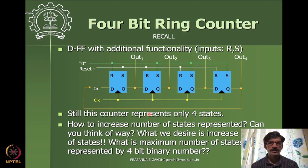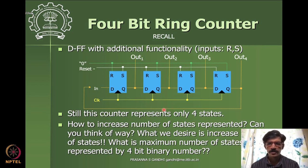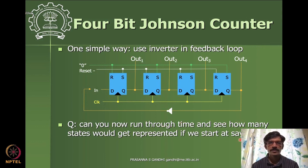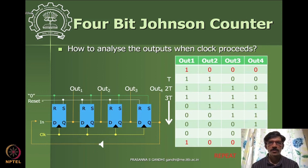A variant is the Johnson counter, which introduces an inverted feedback — the inverted output of the last flip-flop feeds into the first. Starting from state 1000, the next state is 1100, then 1110, and so on. This allows representing more states in the sequence compared to a simple ring counter.